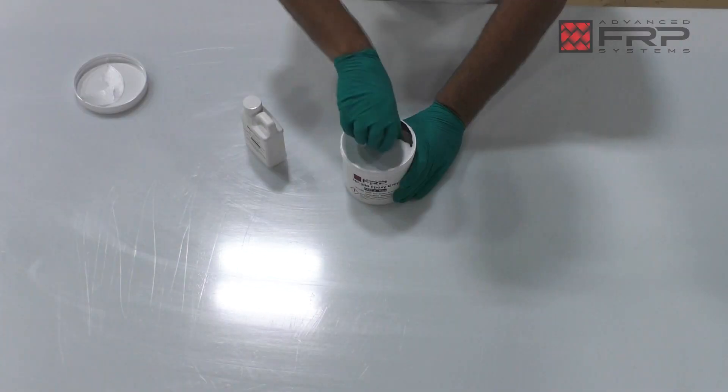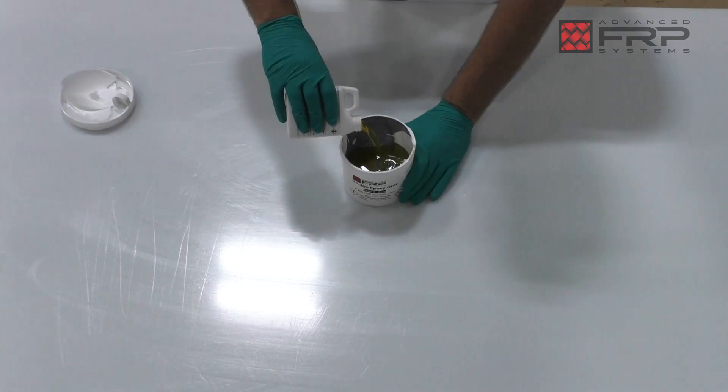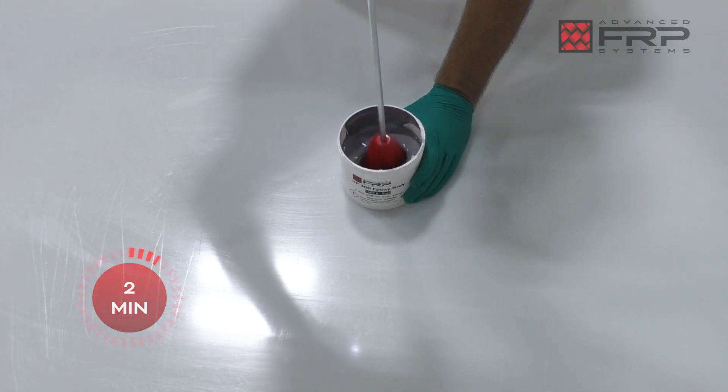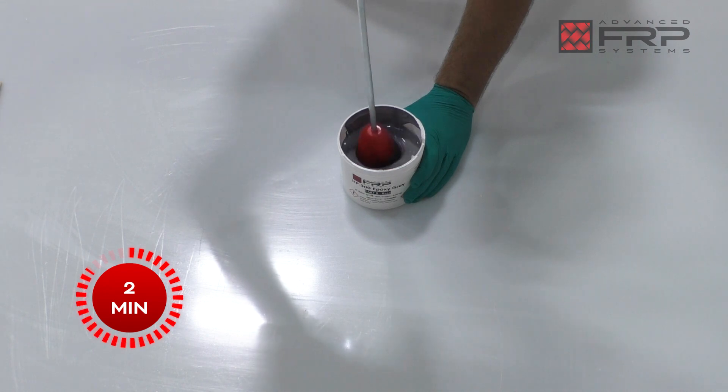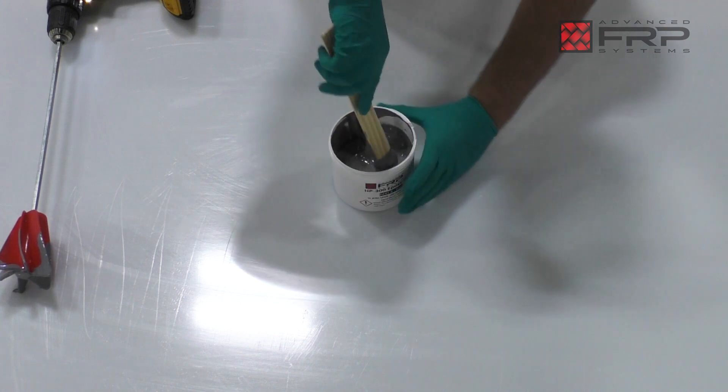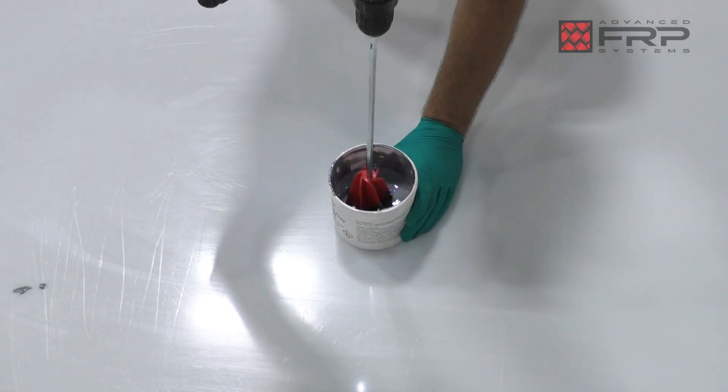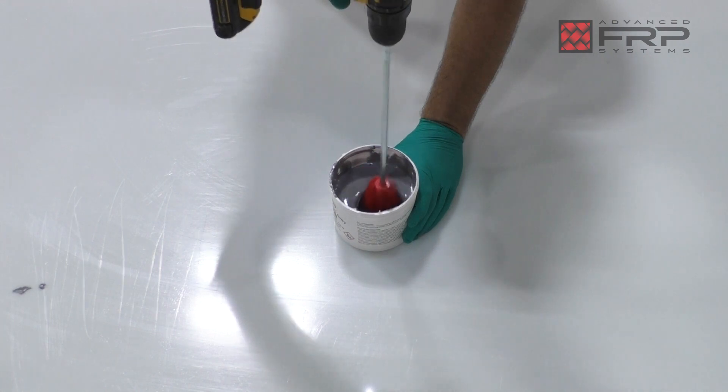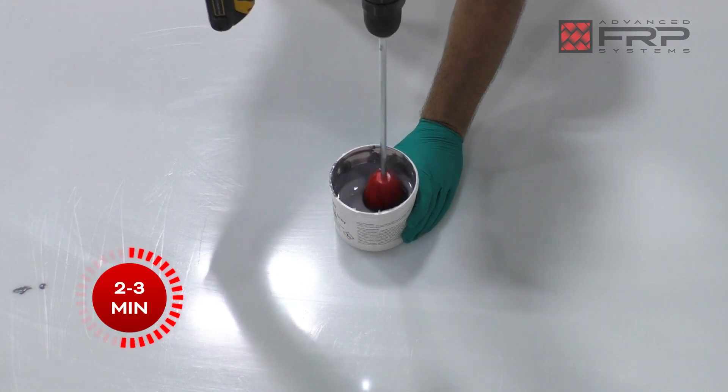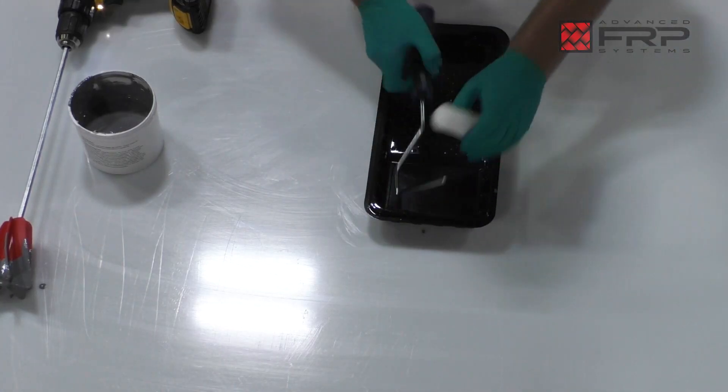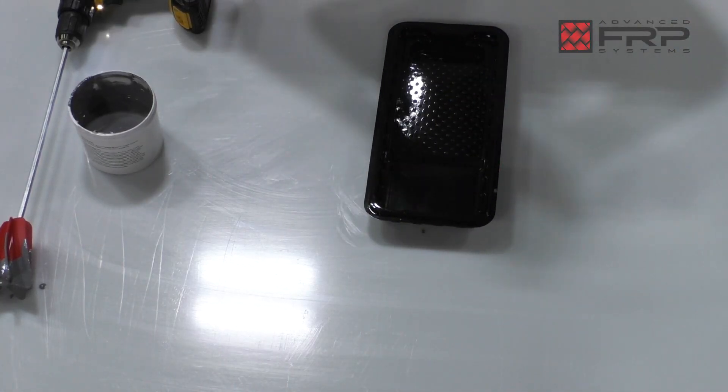Open both Part A and Part B of the HP300 epoxy. Pour all of Part A into the Part B container and mix for two minutes. Take the paint stick and scrape all sides of the Part B container to the best of your ability. After scraping all material off the sides of the container and from the paint stick, mix for another two to three minutes until it is one uniform color. Prepare the paint tray and roller with 3 1⁄8 inch nap.